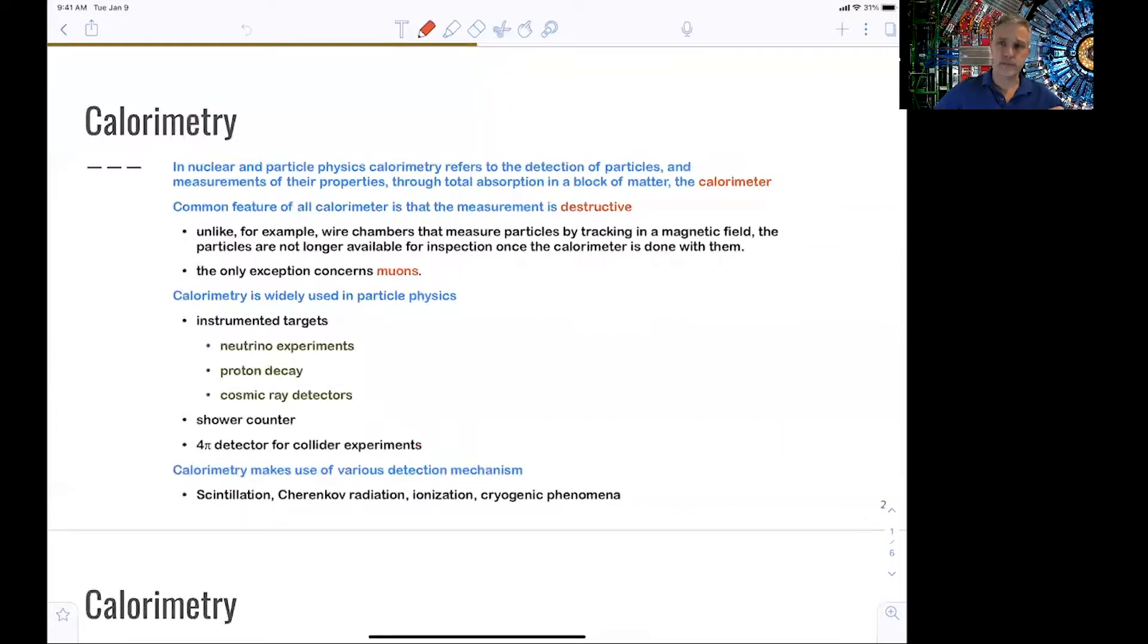The exception to this might be a muon, which might, at high energies, deposit only a small fraction of its energy in the calorimeter, or a neutrino, which flies through without having any interaction. But the purpose is really to measure energies by destroying the particle. And it's widely used in all kinds of areas of particle and nuclear physics, neutrino experiments, proton decay experiments, cosmic ray detectors, collider experiments, and so on.